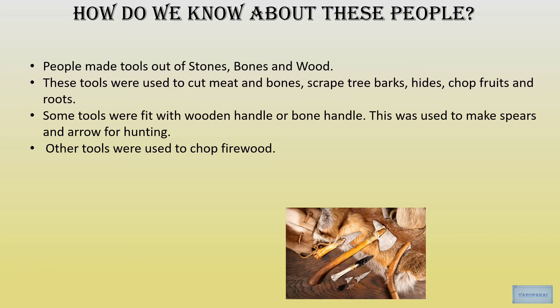We saw how people moved from place to place, but how do we know about these people? We know about them by the tools they used. A few tools found by archaeologists were made out of stones, bones and wood. These tools were used to cut meat and bones, scrape tree barks and hides — hides meaning leather from animals — and to chop fruits and roots. Some tools were fitted with a wooden or bone handle and used to make spears and arrows for hunting. Other tools were used to chop firewood.